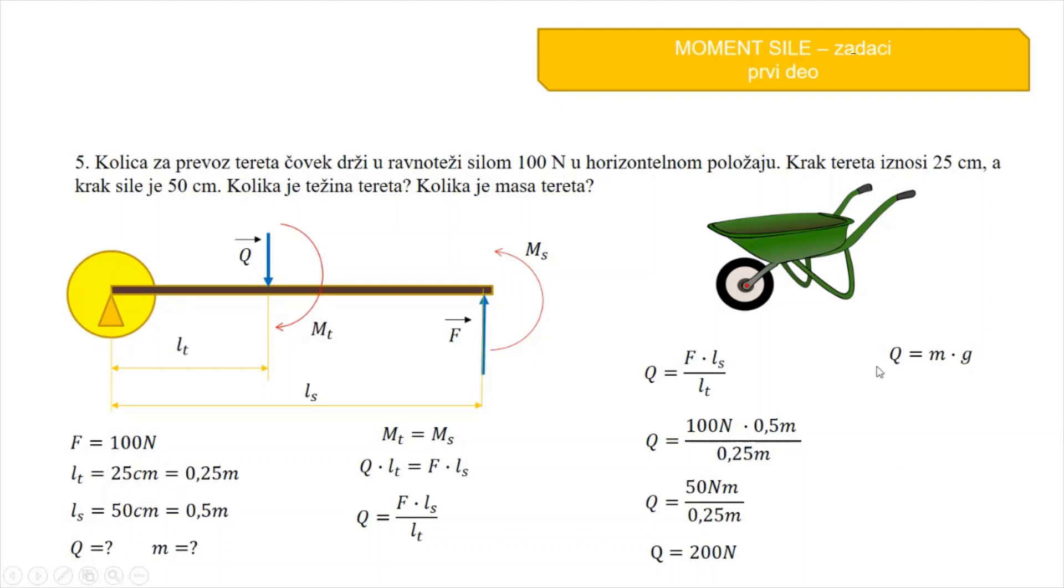Sad masa tereta se dobija iz ovog obraza. Q je jednako M puta G. M će biti jednako Q kroz G. Q je 200 N, a G je standardno 10 N kroz kilogram. 200 podeljeno sa 10 je 20 N i N se skrati i ostaje samo kilogram.